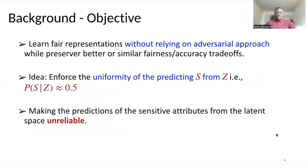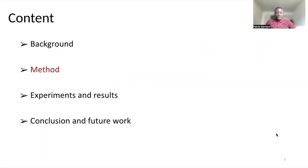Our goal here is to learn fair representation without relying on an adversary approach, while presenting better or similar fairness accuracy tradeoff. The idea is that we would like to enforce the uniformity of predicting S from Z. We want this conditional to be as close to 0.5 as possible when S is a binary case. Thus, by enforcing this uniformity, we're basically making the prediction of S from Z unreliable.